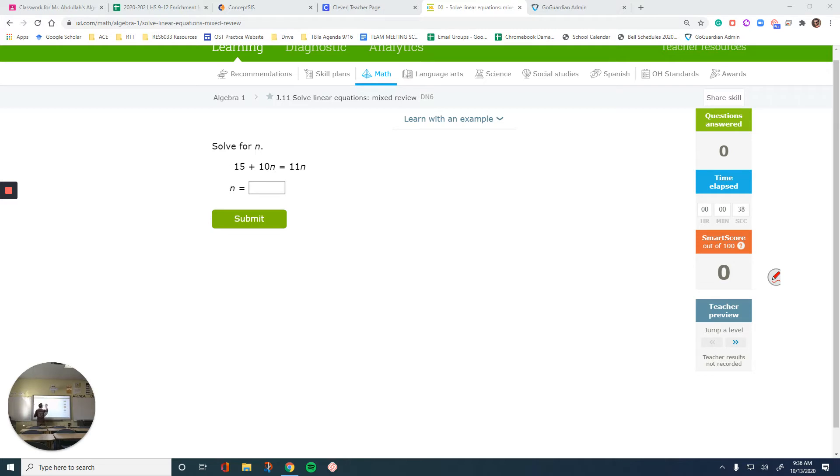So the first thing that we want to do is figure out if you have like terms. You have one like term on the left, another one on the right, so I want to put them together by combining them. Negative 15 plus 10n equals 11n. So what I do is subtract 10n from both sides and then on the left I'm going to have negative 15 equals 11 minus 10 is just 1. So 1n is the same as n. The answer to this one is negative 15.